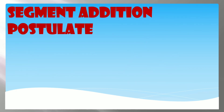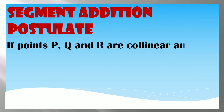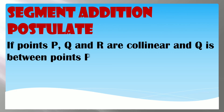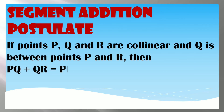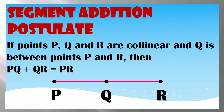The Segment Addition Postulate states: if points P, Q, and R are collinear and Q is between points P and R, then PQ plus QR equals PR. So the total measure of PR comes from adding PQ and QR.